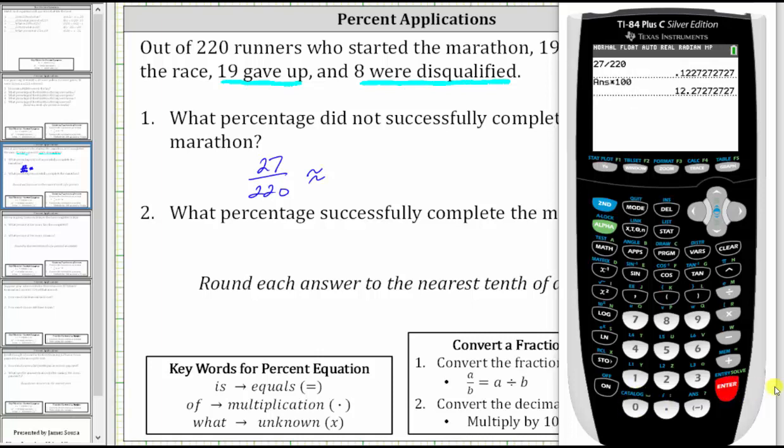We are told to round to the nearest tenth of a percent. Because we have a seven in the hundredths place value, we round up to 12.3%.